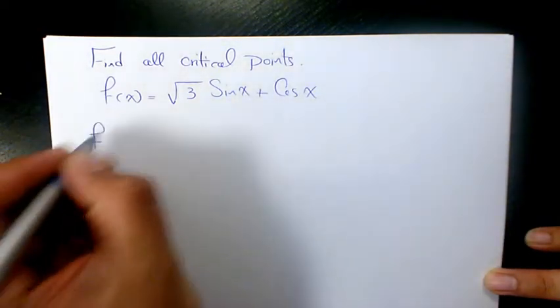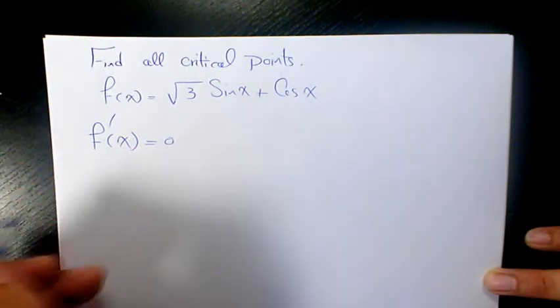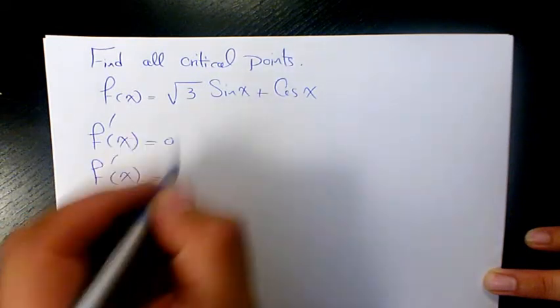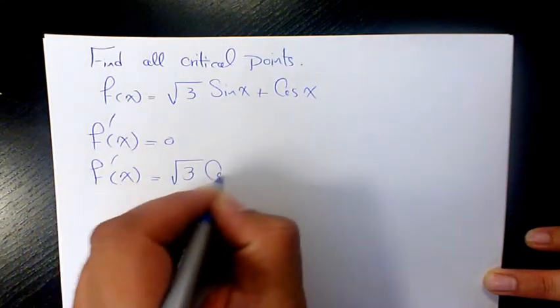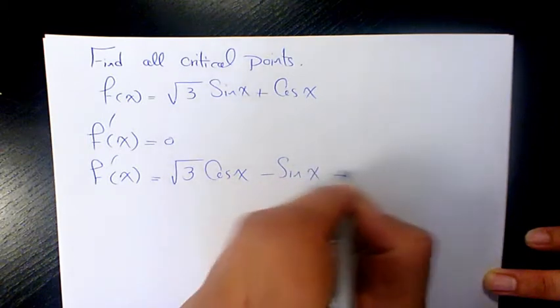You know, critical points are those points that make f'(x) equal to 0 or undefined. Let's find f'(x) for this example. It's going to be √3 cos x - sin x = 0.